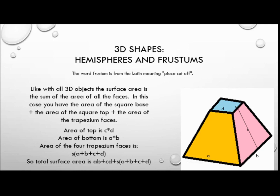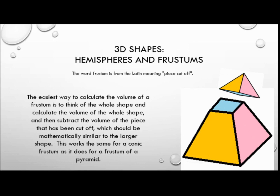I really don't want you to memorise the particular formulas here. What I'd rather you do is just grasp the concept that the surface area of any three-dimensional object is just the sum of the surface area of each face. The easiest way to calculate the volume of a frustum is to think of the whole shape, calculate the volume of the whole shape, and then subtract the volume of the piece that has been cut off. The piece cut off should be mathematically similar to the larger shape, and this works the same for a conic frustum as for any pyramid frustum — square-based, octagonal-based, or any other kind.